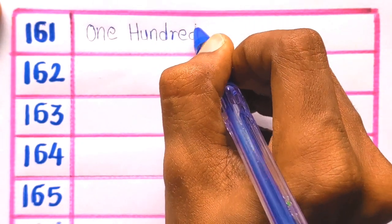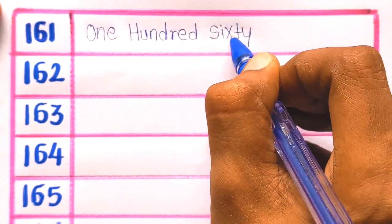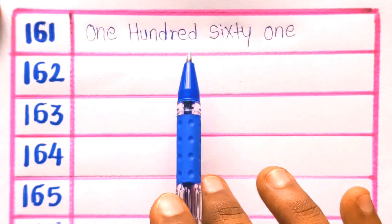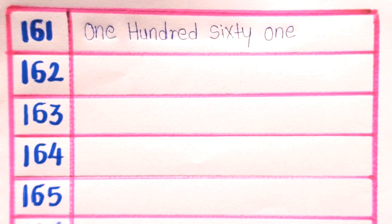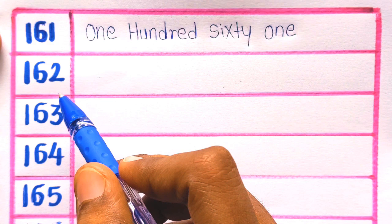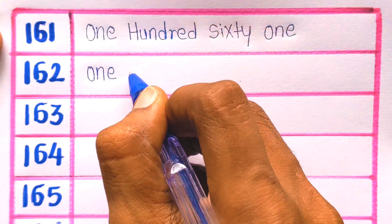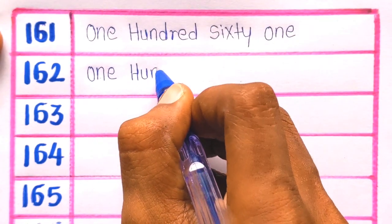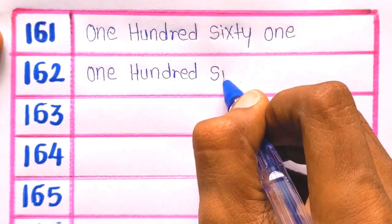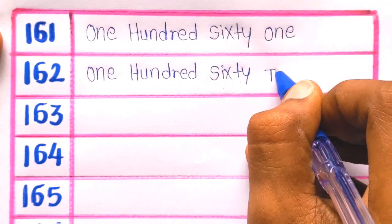161: O-N-E, ONE, H-U-N-D-R-E-D, HUNDRED, S-I-X-T-Y, SIXTY, O-N-E, ONE. 161. Next is 162: O-N-E, ONE, H-U-N-D-R-E-D, HUNDRED, S-I-X-T-Y, SIXTY, T-W-O, TWO. 162.